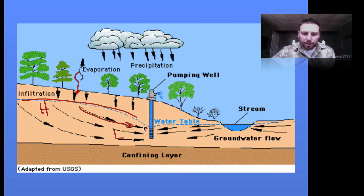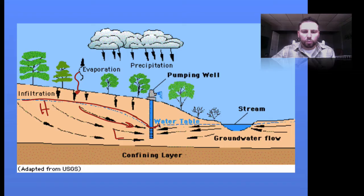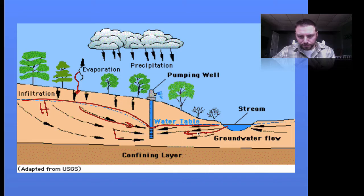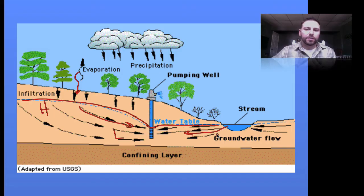The groundwater can be intercepted by a number of things — for instance, a pumping well. You can see that at the pumping well the water table dips, and in the next diagram there's a specific name for that dip around the well. If the well were not there, the groundwater flow would continue toward the stream, but here the well is actually pulling from that stream.